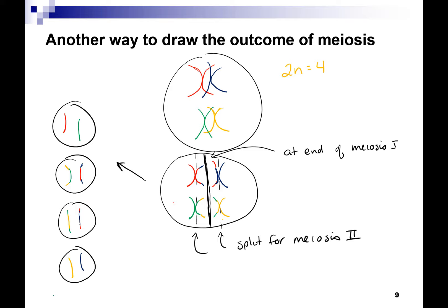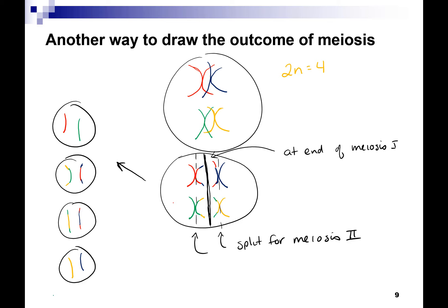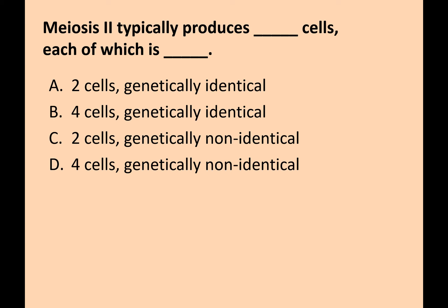What I will ask you to do is draw specific phases of meiosis given a specific number of chromosomes.